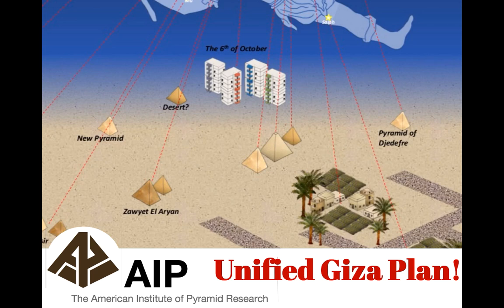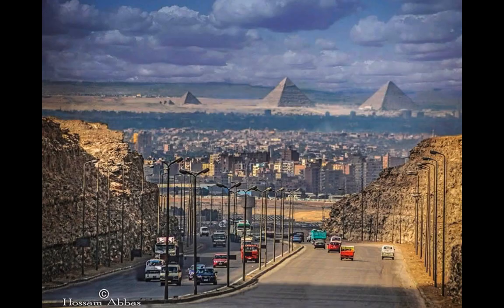Thanks for coming out to our channel. Today I want to look at various plans that show that the pyramids in Giza — the three main pyramids and the wider set of pyramids in Egypt — present a unifying plan.